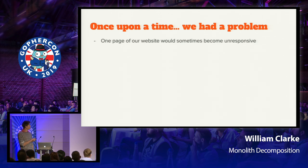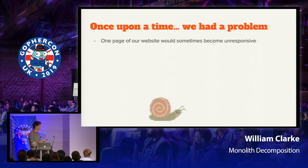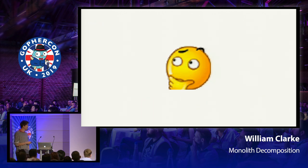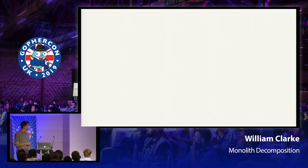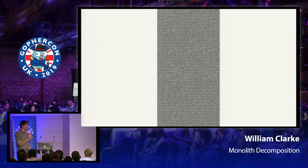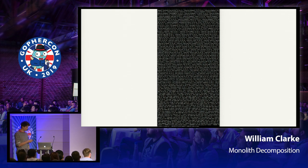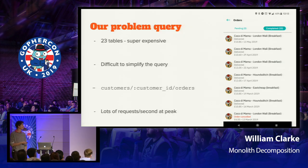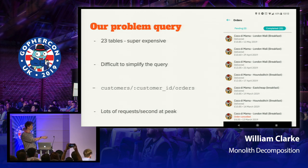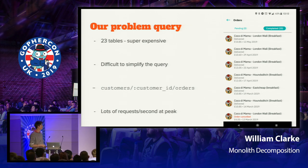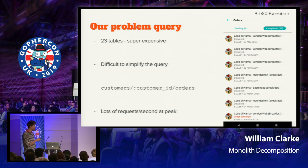We had a problem at Deliveroo which doesn't happen very often — a page of our website would sometimes go slow, and we realized this was sometimes affecting the database for other queries too, which is obviously bad. We looked at this and found a query that was relatively big that our ORM decided to make, and it was slowing things down. It was a join of 23 different tables, needed for an endpoint — 'give me all the orders I've ever done.' That endpoint had different uses and lots of requests at peak time.